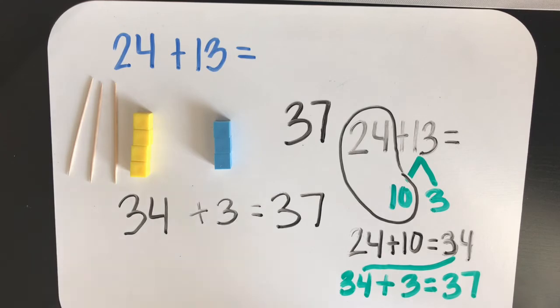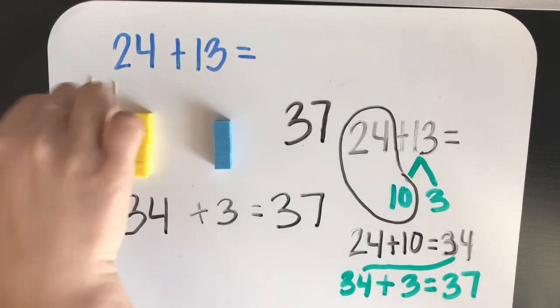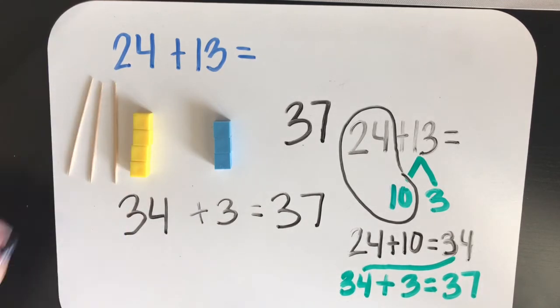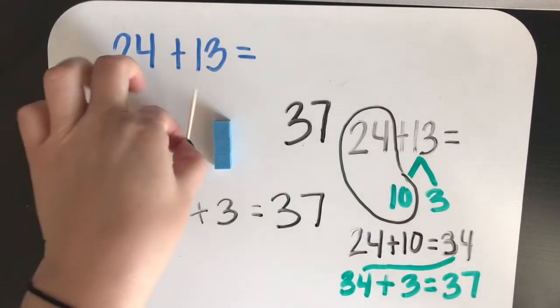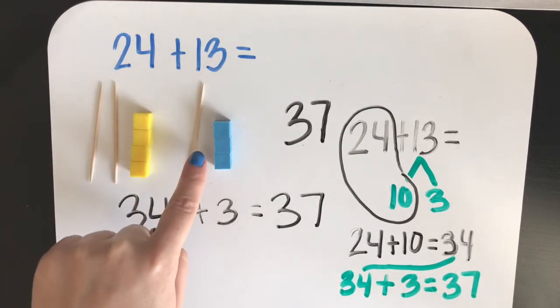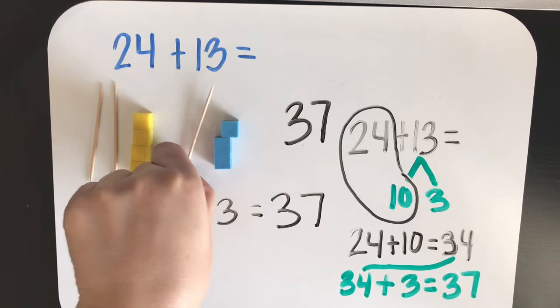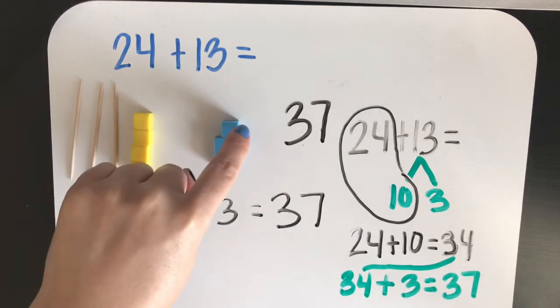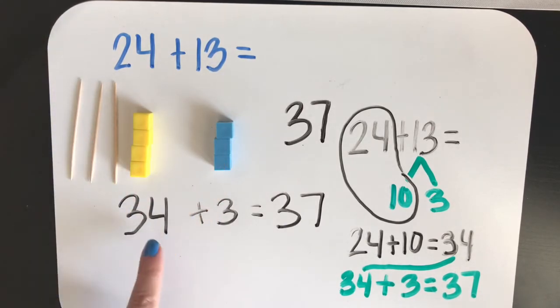Stop and think about the steps that we've done so far. First, we broke apart the smaller number, which was 13 in our case. We added our tens first, that's how we got thirty-four, and then we added the ones that were left over.